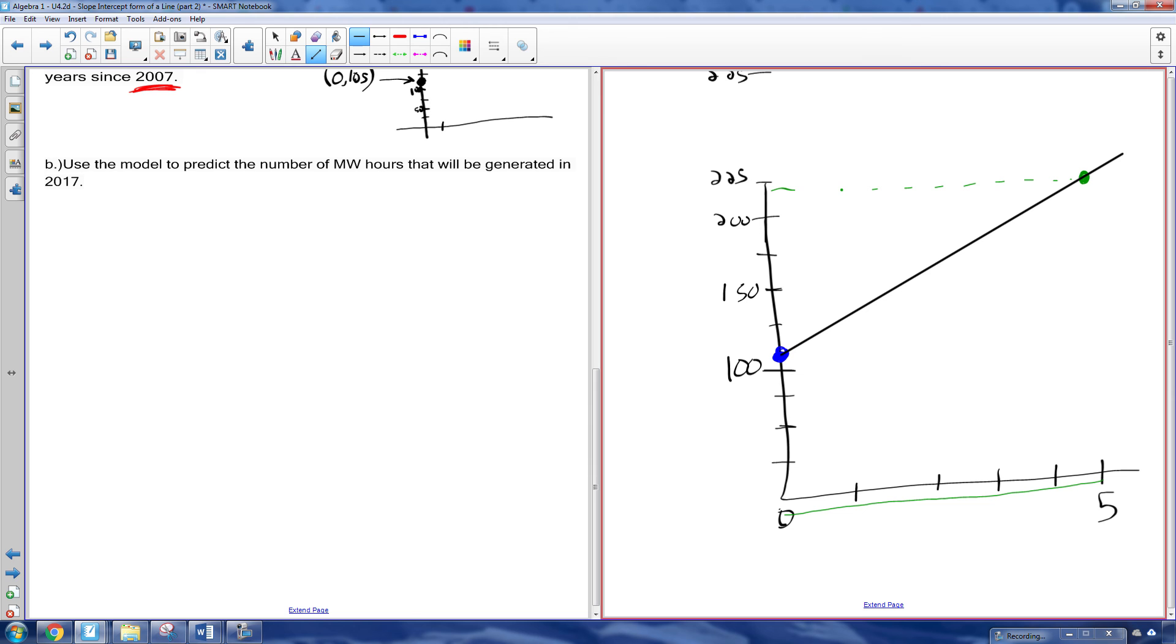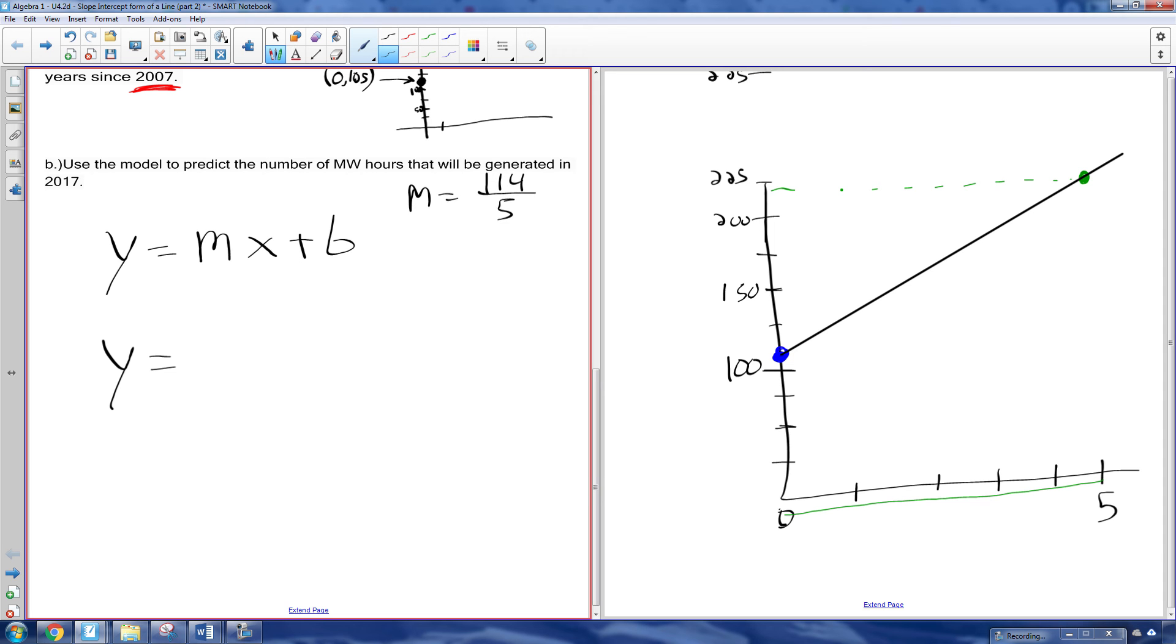And we just need y equals mx plus b for that. What are we going to use? What's the rise and what's the run? I think Kyle had said the rise, the change in y was 114. So it's 114 is the rise divided by 5. So that's our slope. You can leave it if you want. Plus our y-intercept. Where did we start? What's our y-intercept? Isn't this our y-intercept? Which is 105, 110? What was it? Help me out, people. 105. So plus 105. And that is the equation of that line.